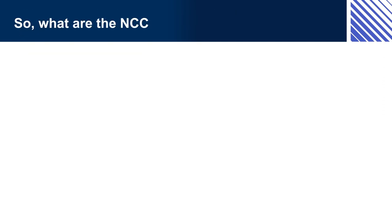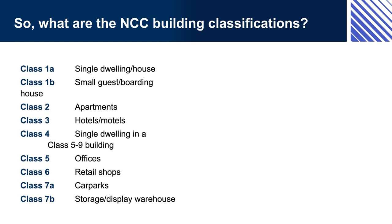So what are the NCC building classifications? Buildings are built to serve different purposes, so the way they are designed and constructed also varies. Therefore, the requirements they must meet also vary in terms of things like size, space, facilities, light, how you enter and exit them, fire safety, and structural strength. Building classifications within the NCC reflect this variation in the purpose of different buildings and the performance requirements that they must meet.